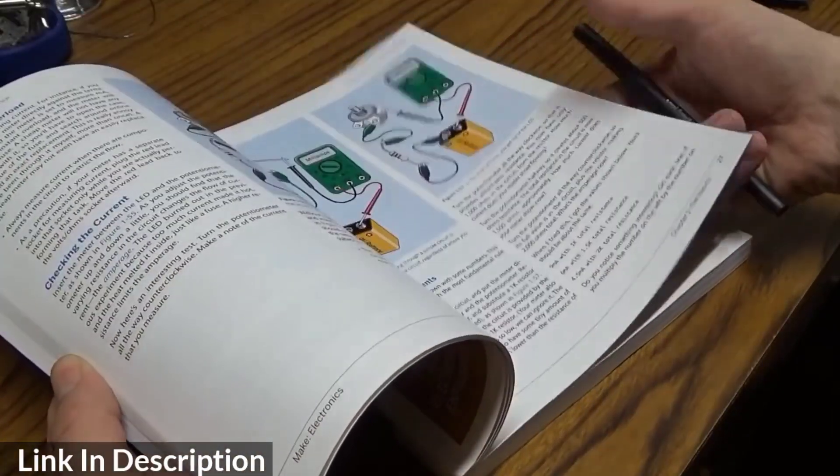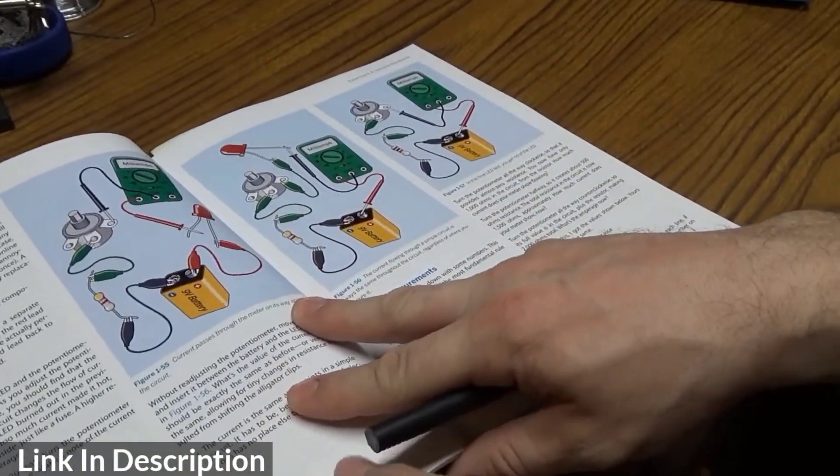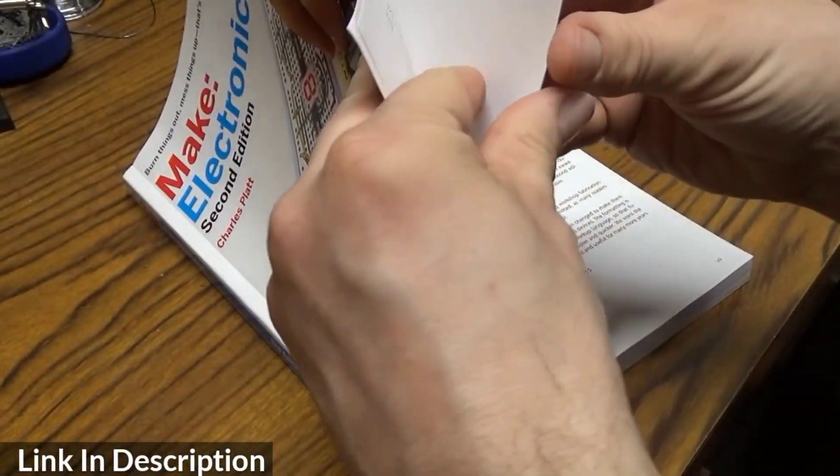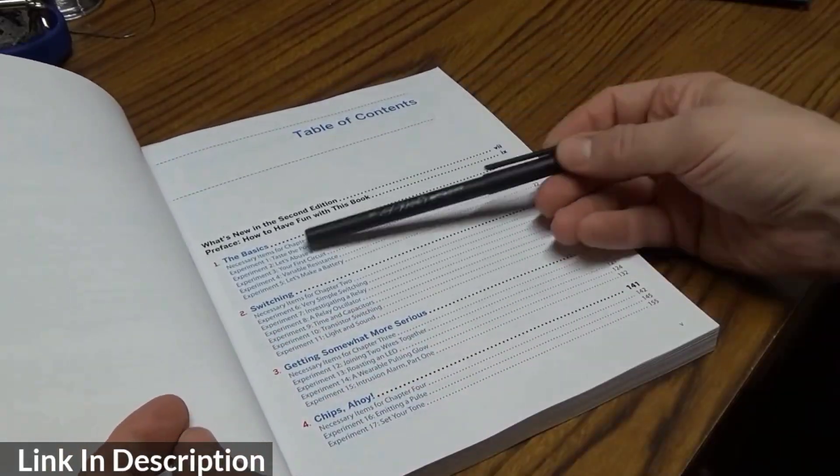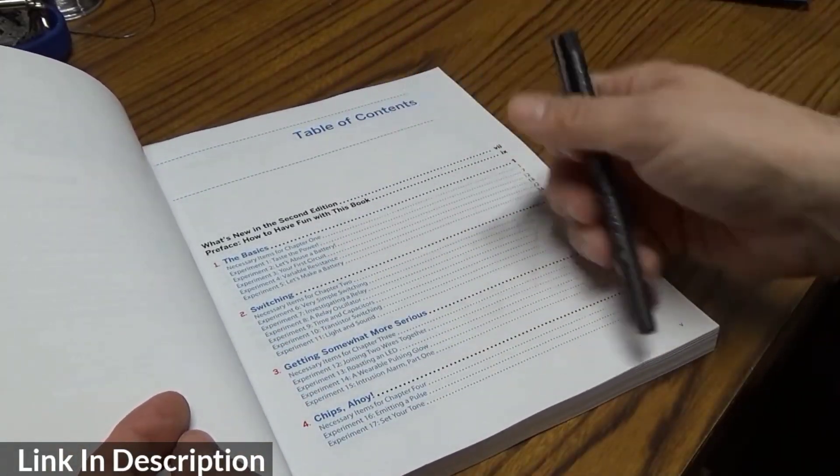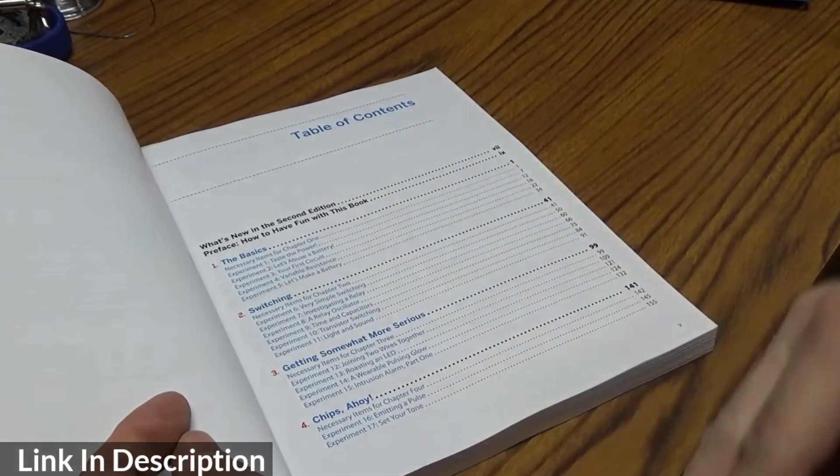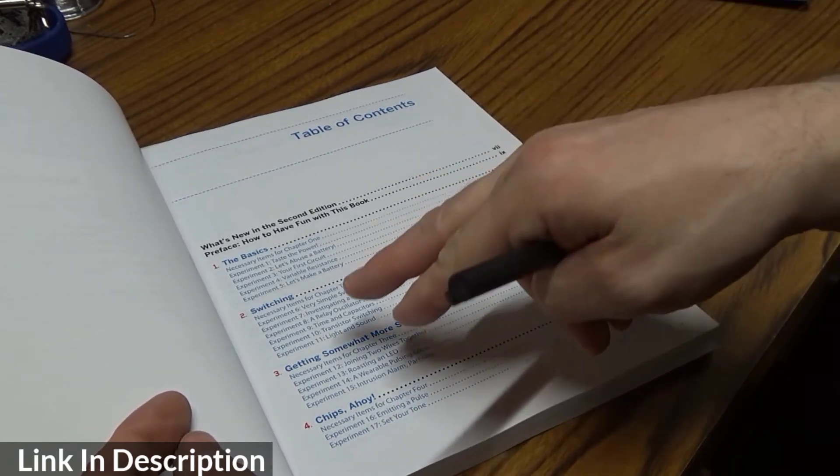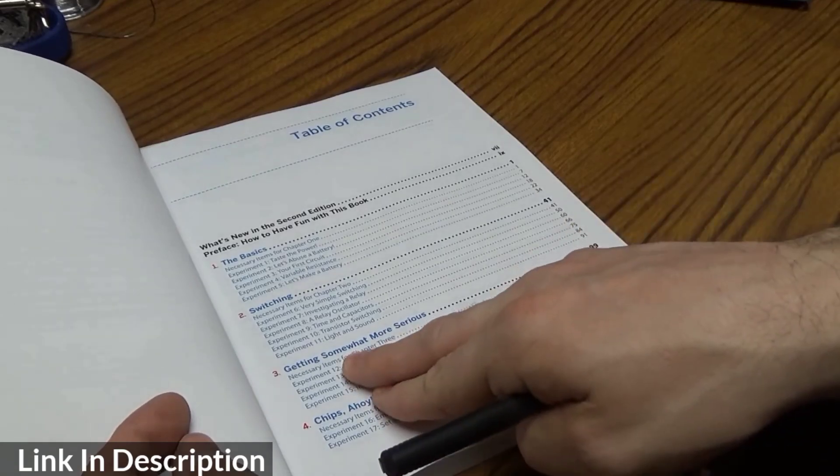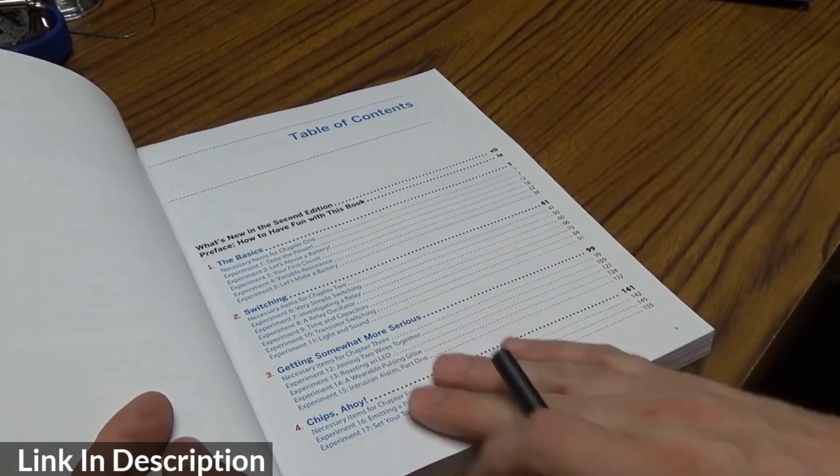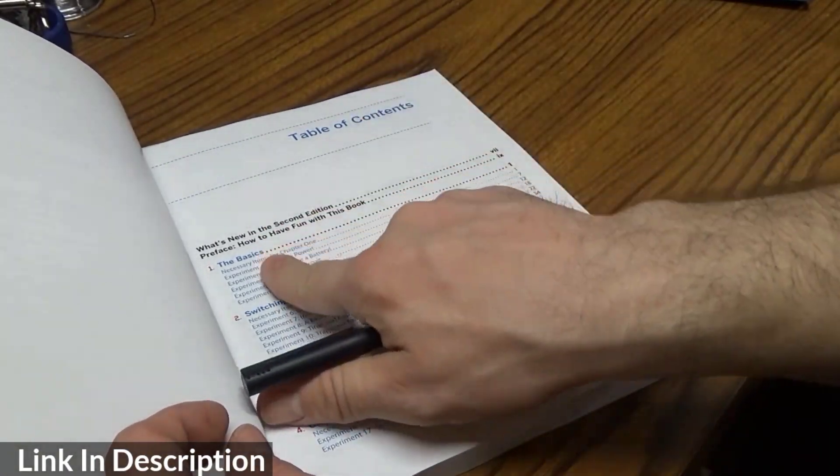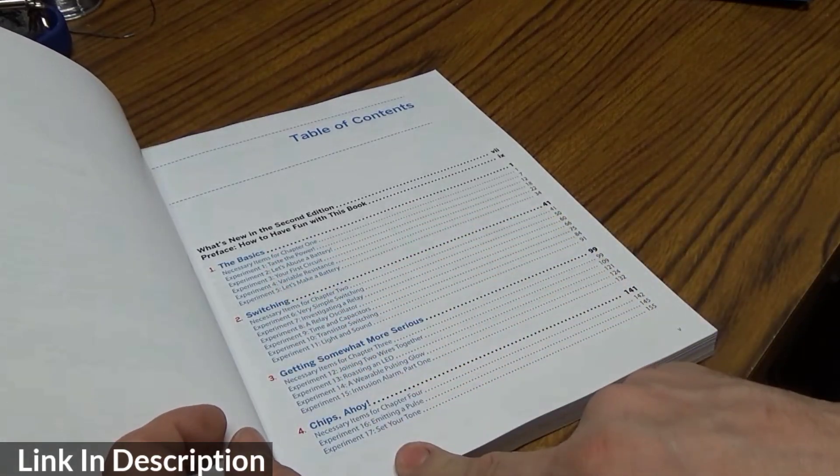Each book has a lot of really good illustrations. They show you how to hook up various projects. The book is split up into various sections from basics and then they start getting into specifics such as working with integrated circuits and more advanced concepts. Each section contains a number of experiments.